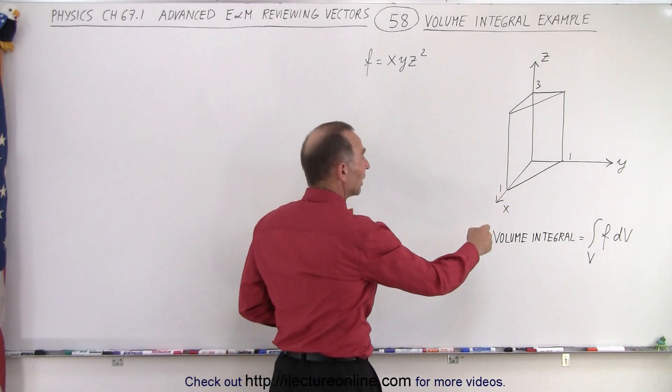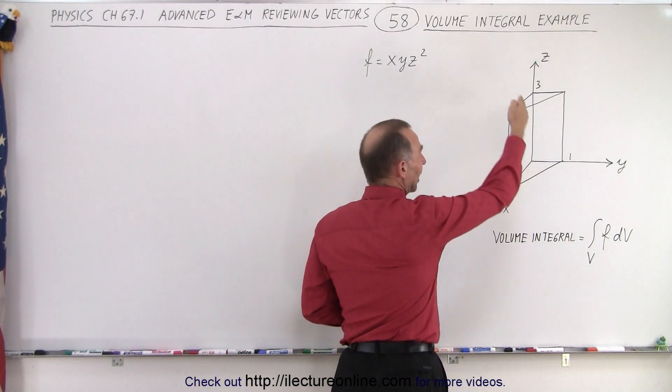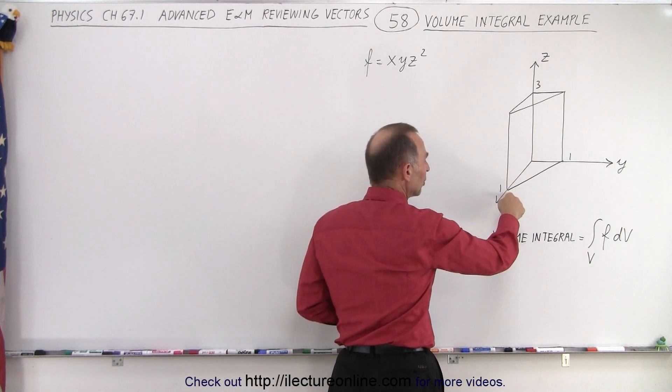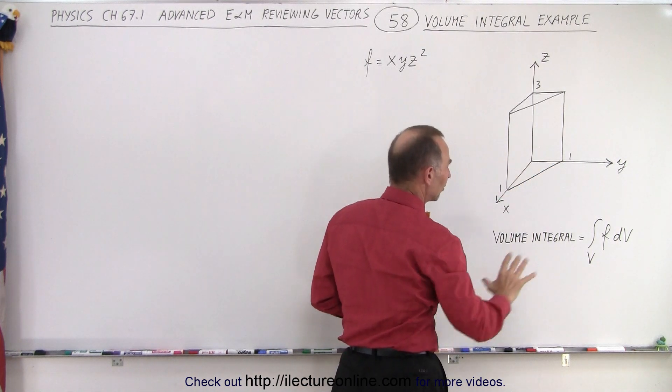Here we have a volume. It has a triangular base, a height of three units. It goes out one unit in the x direction, one unit in the y direction. This is our volume.